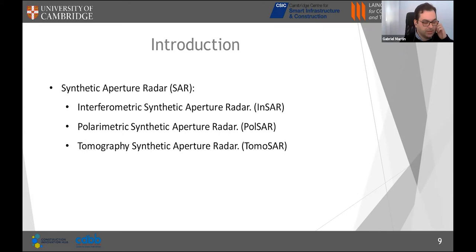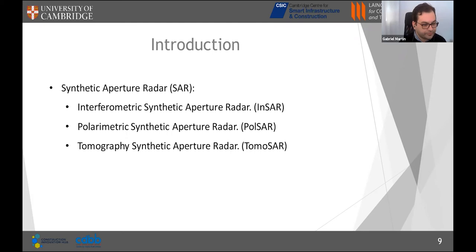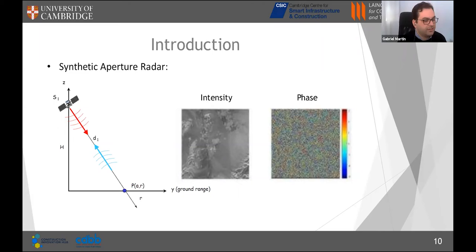One technique is Interferometric SAR (InSAR), which uses the phase of different SAR images to estimate topography and surface displacements. Another is Polarimetric SAR (PolSAR), which sends signals with different polarizations — objects interact differently with polarized signals, allowing characterization of those objects. Finally, Tomographic SAR (TomoSAR) uses SAR images from different positions to estimate the 3D properties of objects.